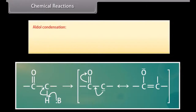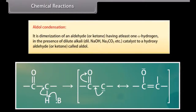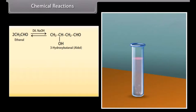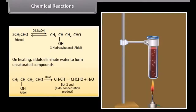Aldol condensation: It is dimerization of an aldehyde or ketone having at least one alpha-hydrogen in the presence of dilute alkali such as dilute sodium hydroxide or sodium carbonate, to form a hydroxy aldehyde or ketone called aldol. Ethanal in the presence of dilute sodium hydroxide undergoes condensation to form a syrupy liquid known as aldol. On heating, aldols eliminate water to form unsaturated compounds.